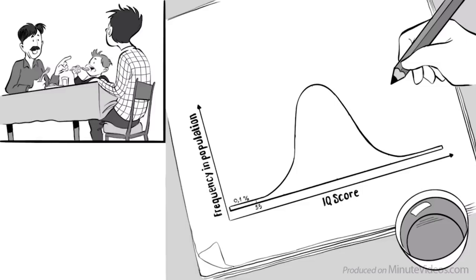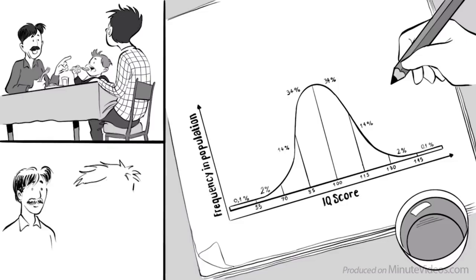0.1% of people will have an IQ of 55 or below, 2% have an IQ between 55 to 70, 14% between 70 and 85, 34% will score between 85 and the average which is set at 100. Another 34% have an IQ between 100 and 115, and 14% between 115 to 130. Only 2% have an IQ higher than 130, and only 0.1% will have an IQ of a genius of 145 or above, like your little brother.